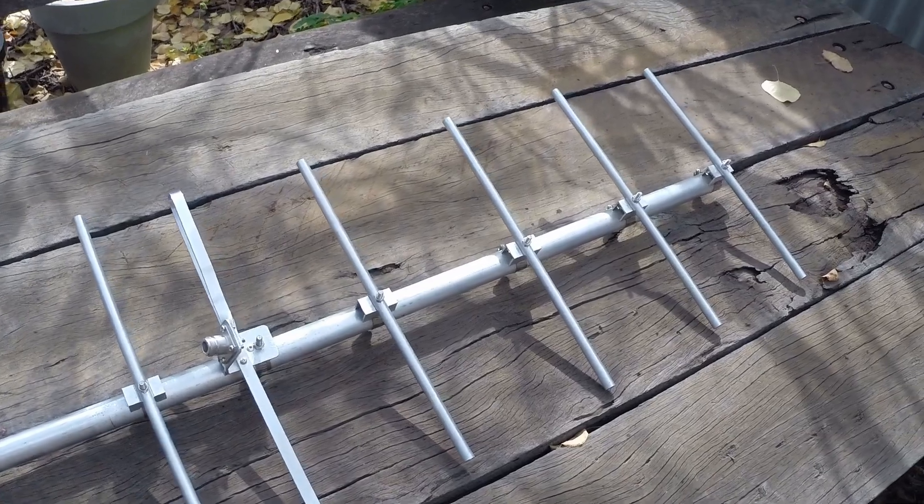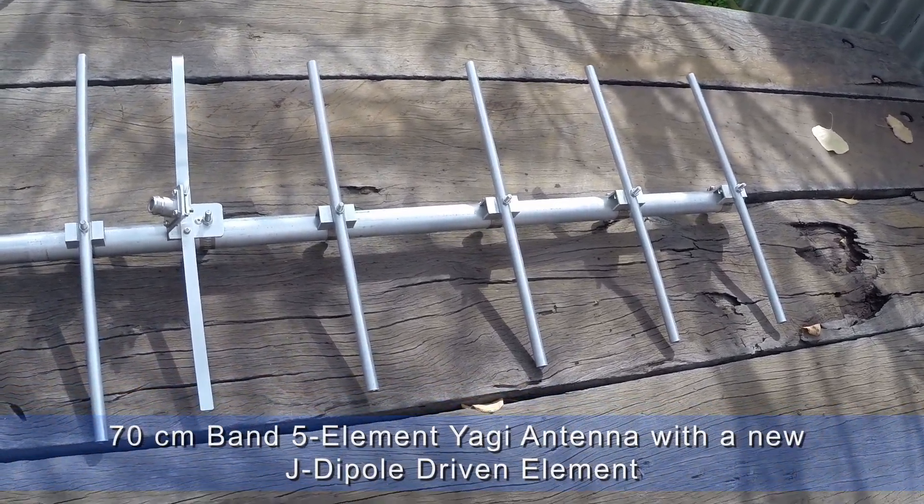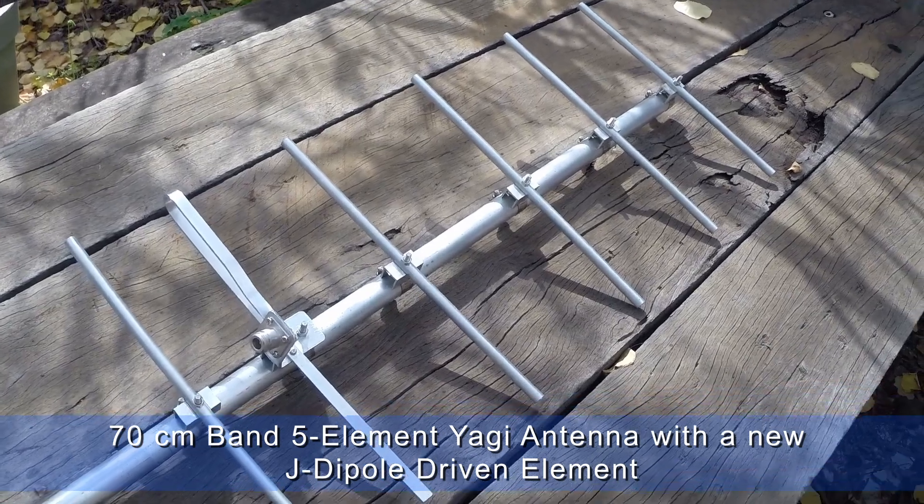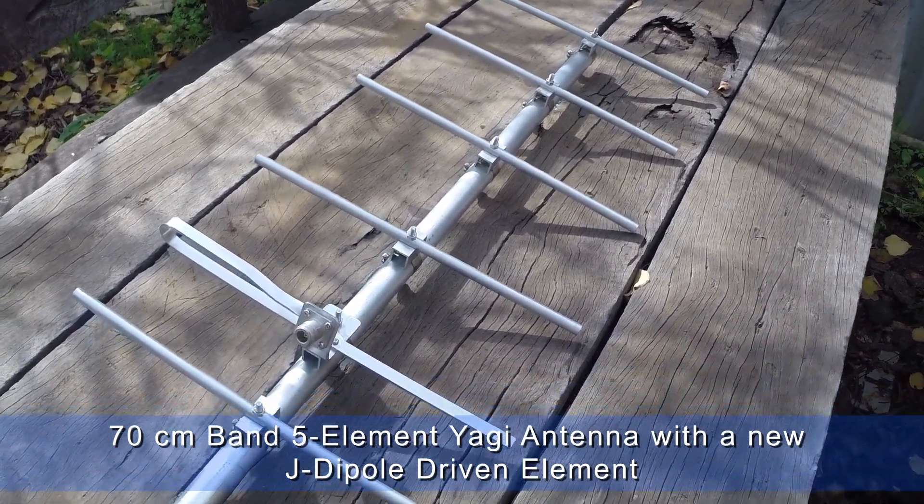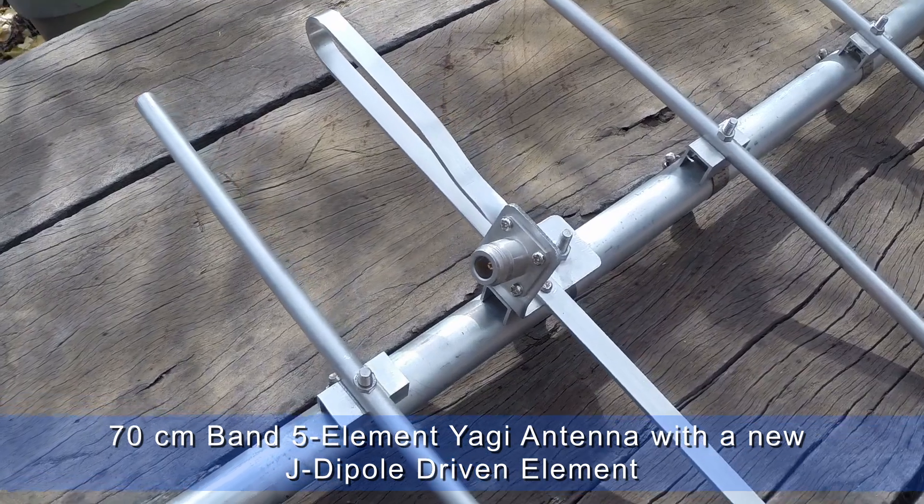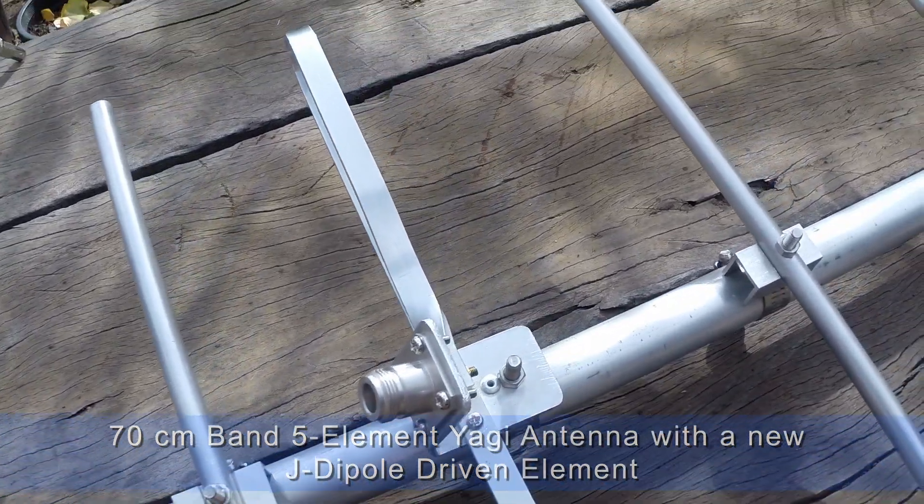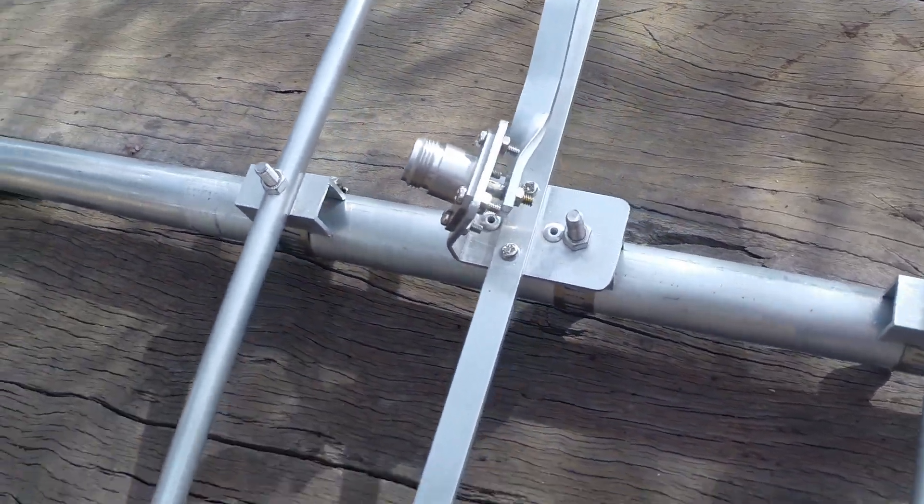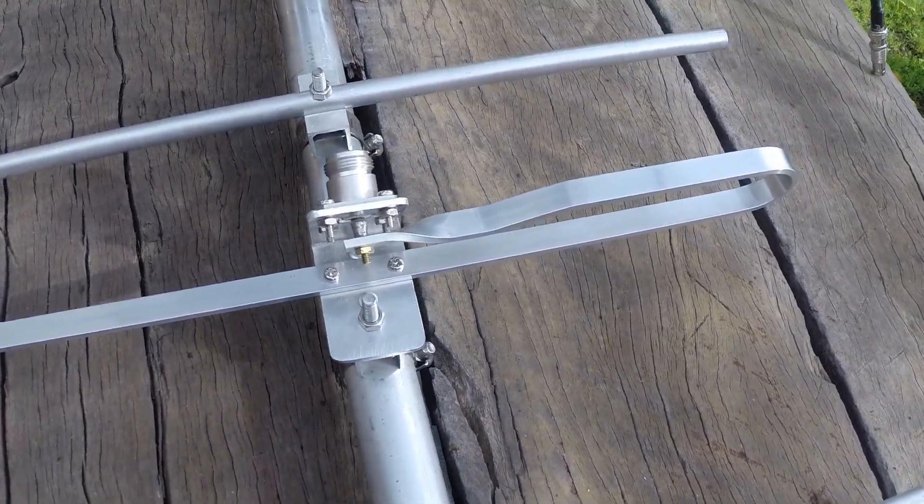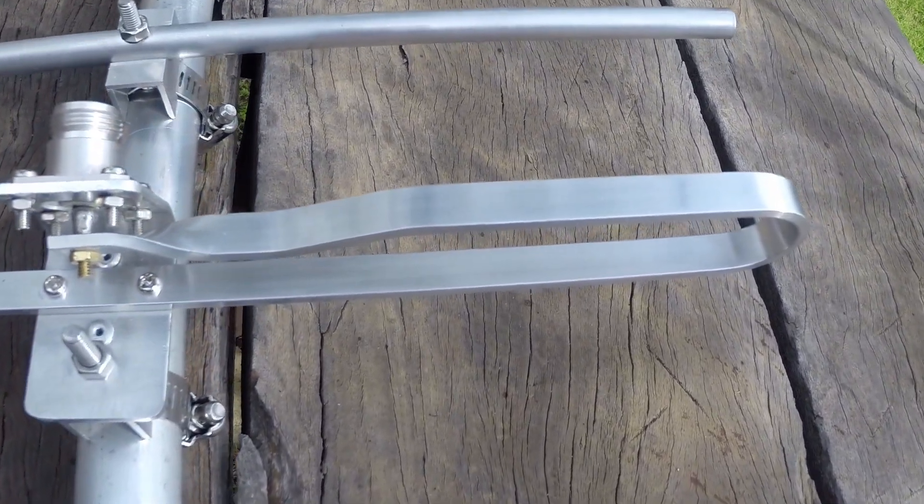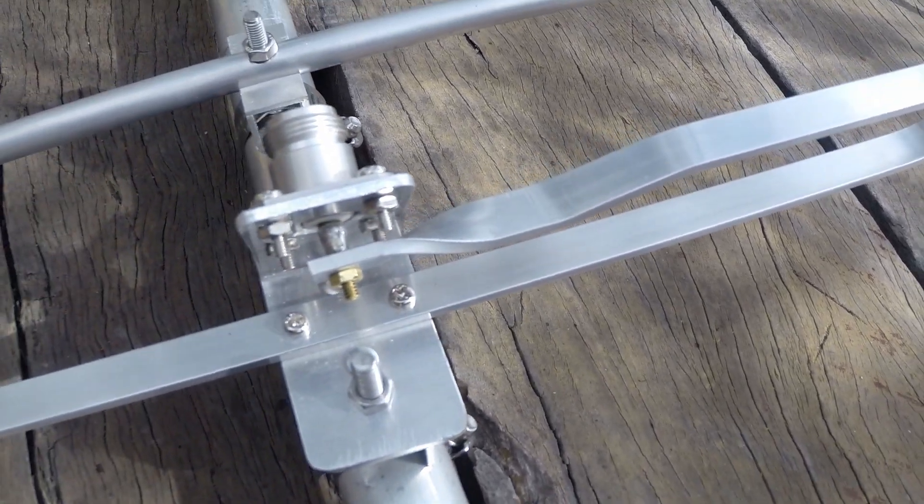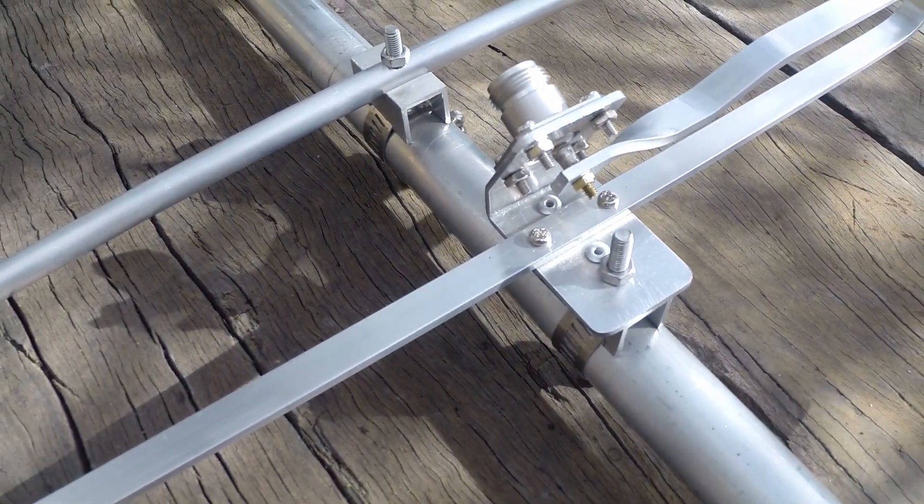This is a 70 centimeter band Yagi antenna been previously constructed with a folded dipole as a driven element. I've decided that the folded dipole, while in a lot of ways superior, is actually quite difficult to construct and I wanted a faster method of construction, therefore simpler.